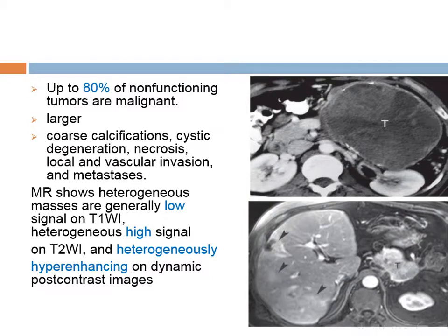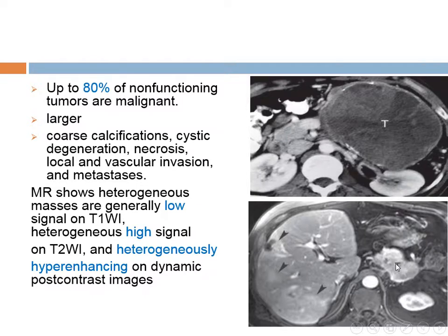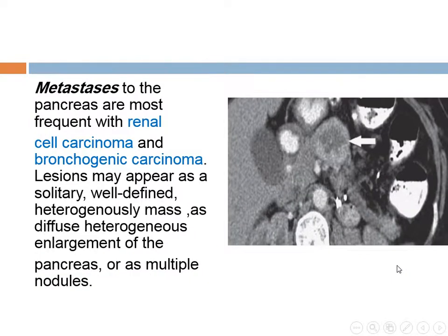Up to 80% of non-functioning tumors are malignant. They are larger, with coarse calcification, cystic degeneration, necrosis, vascular invasion, and metastasis. On MRI, they are low in T1, high in T2, with heterogeneous enhancement. Non-functioning tumors are more feared than pancreatic adenocarcinoma because of their high malignant potential and larger size at presentation. Metastasis to the pancreas is most frequent from renal carcinoma or bronchogenic carcinoma.